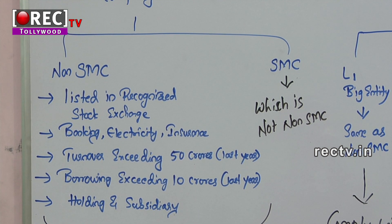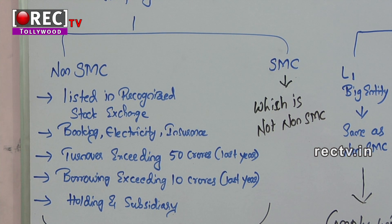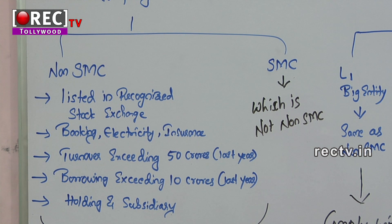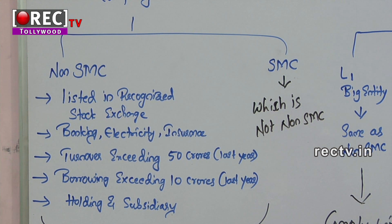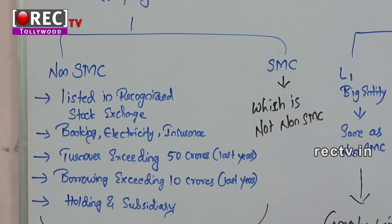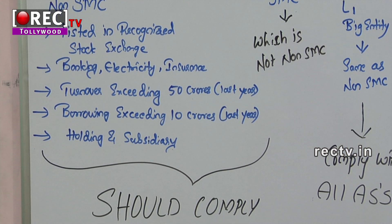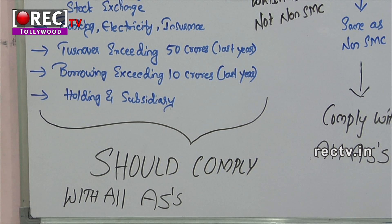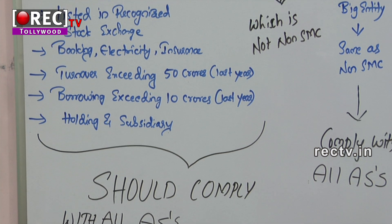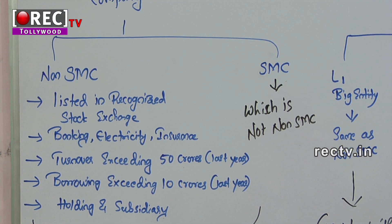If a holding company is a non-SMC, then the subsidiary is also non-SMC. SMC means which is not a non-SMC — that is, not listed, not banking/electricity/insurance, turnover does not exceed 50 crores, borrowings do not exceed 10 crores, and there is no holding-subsidiary relationship. If a company is a non-SMC, it must comply with all accounting standards. SMC entities have some relaxations when complying.